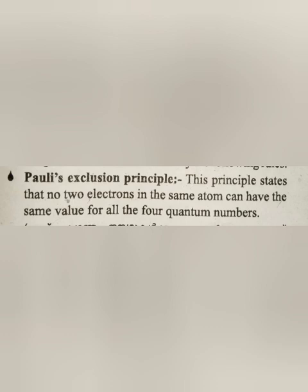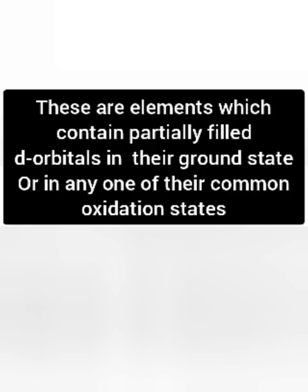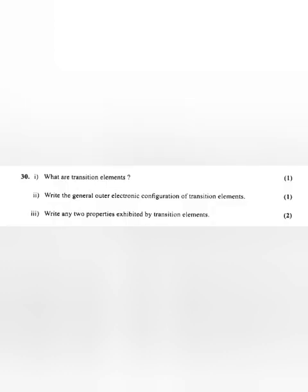What are transition elements? Answer: These are elements which contain partially filled d-orbitals in their ground state or in any one of their common oxidation states. They include elements from group 3 to 12. Write the general outer electronic configuration of transition elements. Answer: n minus 1 d1 to 10, ns 0 to 2.